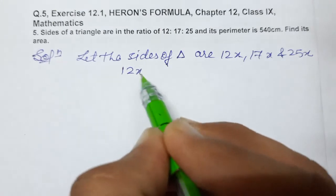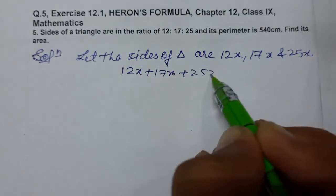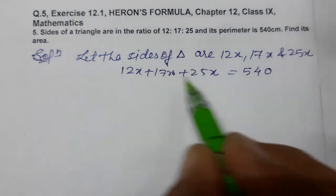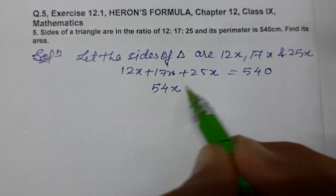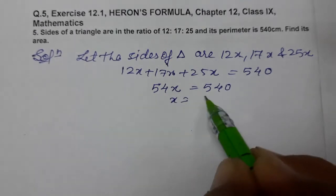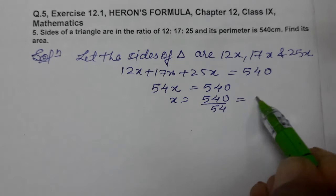Means 12x plus 17x plus 25x equals to 540. Now add: 25, 17, 12 equals 54. So 54x equals to 540. Means we can find out x. x equals to 540 divided by 54, means x equals to 10.